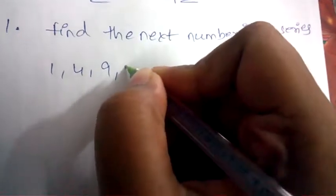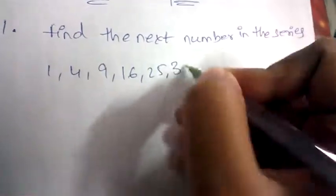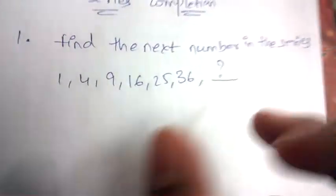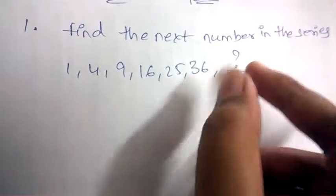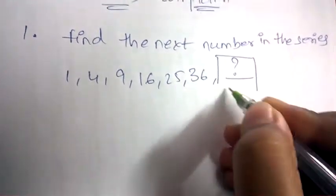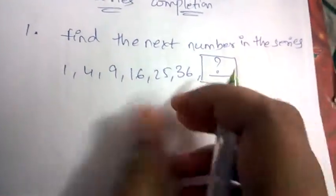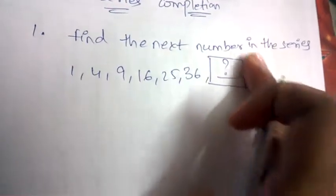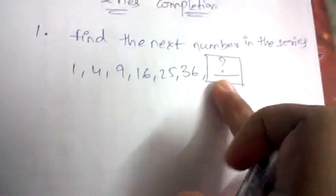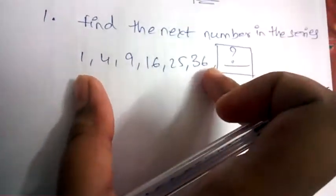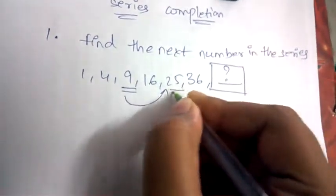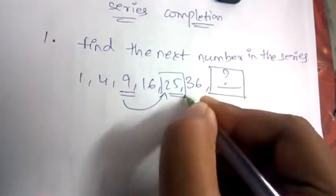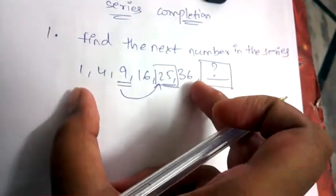The numbers in the first question are: 1, 4, 9, 16, 25, 36, question mark. Numbers in a series are given and we have to find what number appears at the question mark position. First, in order to find which number comes there, we have to analyze why these numbers came in this particular sequence — why 9 is here and not 29, for example.